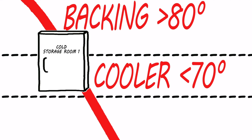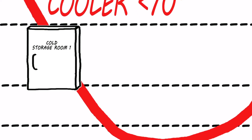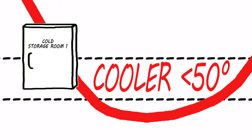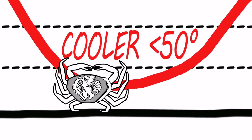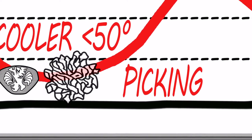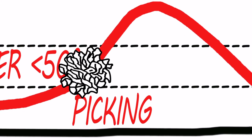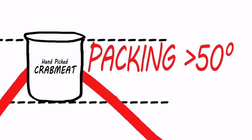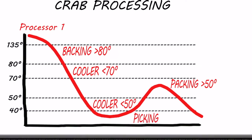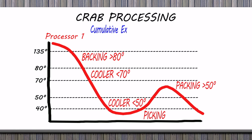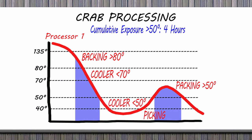As the product continues to cool, monitoring shows the internal temperature is below 50 degrees during an additional hour. The crab is then taken out of the cooler for picking, where the cooked crab meat is removed from the shell by hand. During the picking and packing steps, the temperature of the crab meat goes above 50 degrees for an additional two hours. Times and temperatures during unrefrigerated conditions are cumulative, so the processor's assessment shows the product was above 50 degrees Fahrenheit for a total of four hours, and only one of those hours was above 70 degrees.